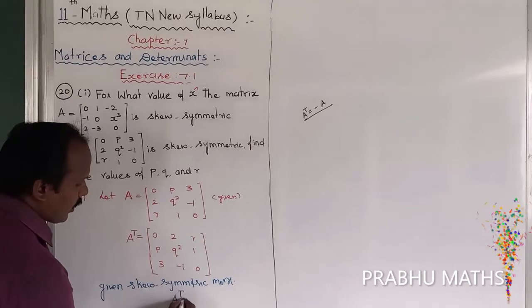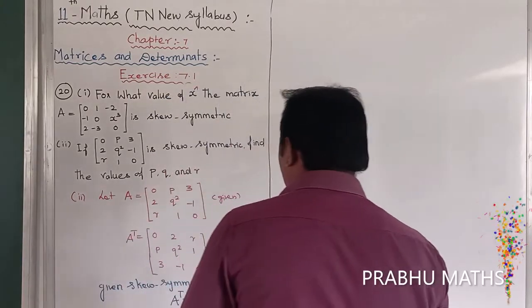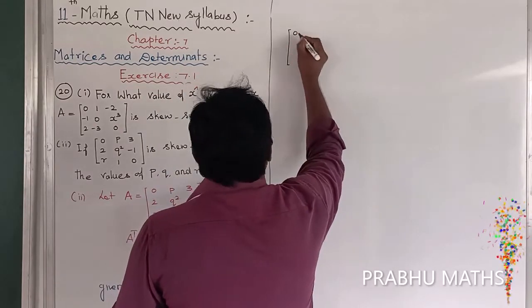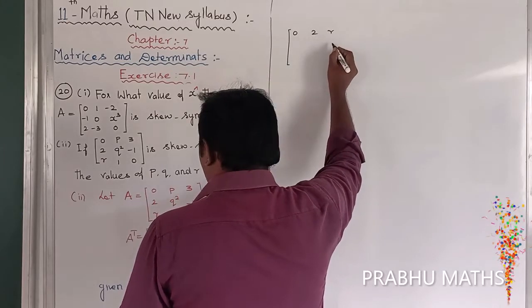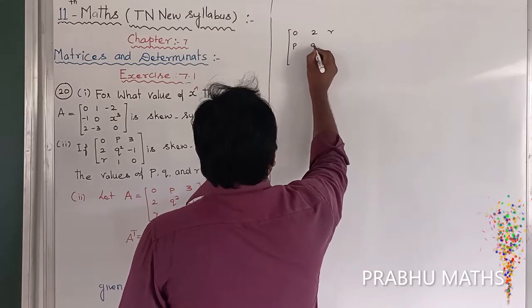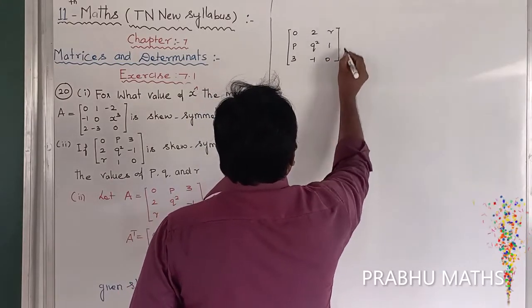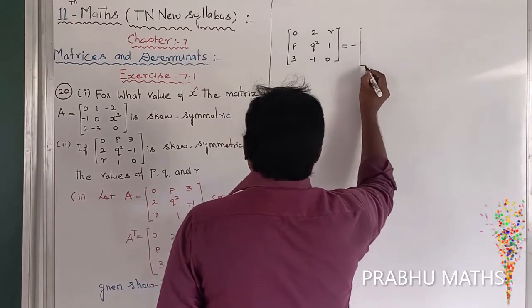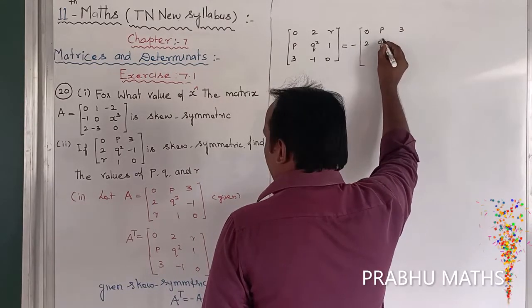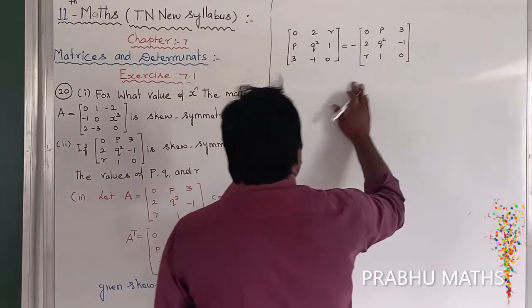Since the condition for skew-symmetric is A transpose equals minus A, we apply that here. So A transpose equals minus A gives us: first row — 0, 2, r; second row — p, q-square, 1; third row — 3, minus 1, 0 equals minus of the original matrix, i.e., 0, minus p, minus 3; minus 2, minus q-square, 1; minus r, minus 1, 0. Now we equate the corresponding entries.